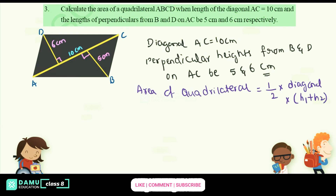Let H1 be 5 cm and H2 be 6 cm. The formula uses points BE and DF as the perpendicular heights, so the area equals half into AC into (BE plus DF).